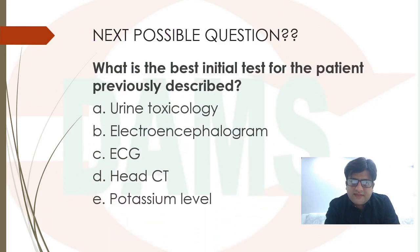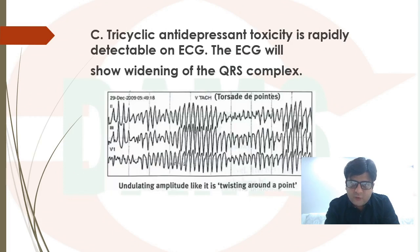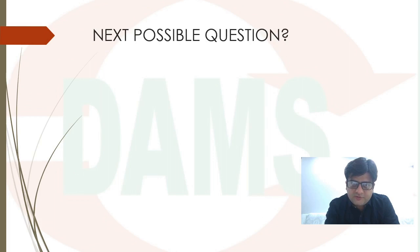What is the best initial test for the patient previously described? The options are urine toxicology, EEG, ECG, head CT, and potassium. The answer is ECG. TCA toxicity is rapidly detectable on ECG — it will show widening of the QRS complex and Torsades de Pointes, making ECG a good test for TCA toxicity detection.